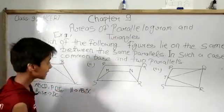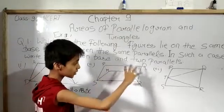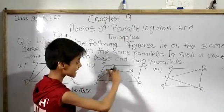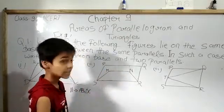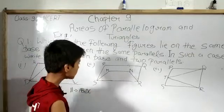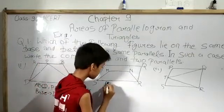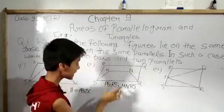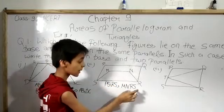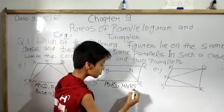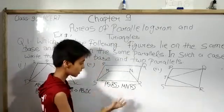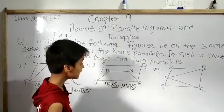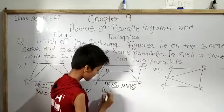For the second figure, we have a parallelogram PQRS and inside it another quadrilateral MNRS. We have to tell whether they lie on the same base. RS is part of parallelogram PQRS and RS is also part of quadrilateral MNRS, so RS can be taken as the base for both figures. The common base is RS.